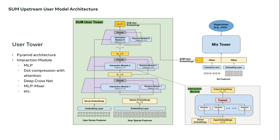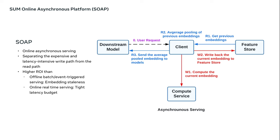Here is an overview of the upstream user model architecture, which consists of two main components: the user tower and the mix tower. To adapt to the dynamic nature of user features and ensure embedding freshness, we designed an online asynchronous platform called SOAP — a latency-free online serving system complemented with model freshness and embedding stabilization, which enables frequent user model updates and online inference of user embeddings upon each user request.